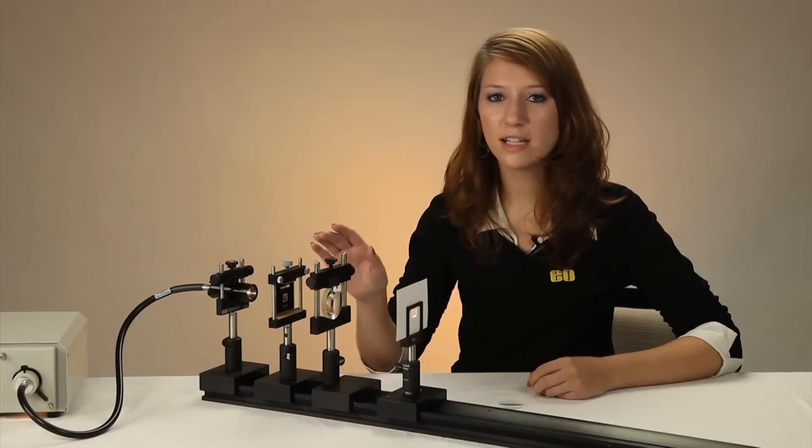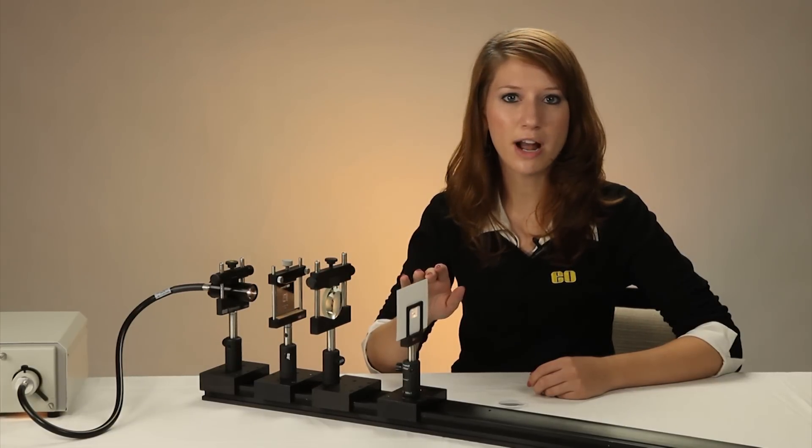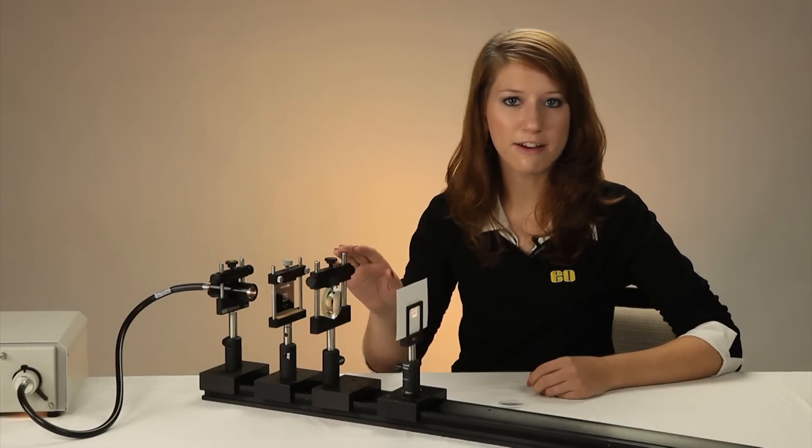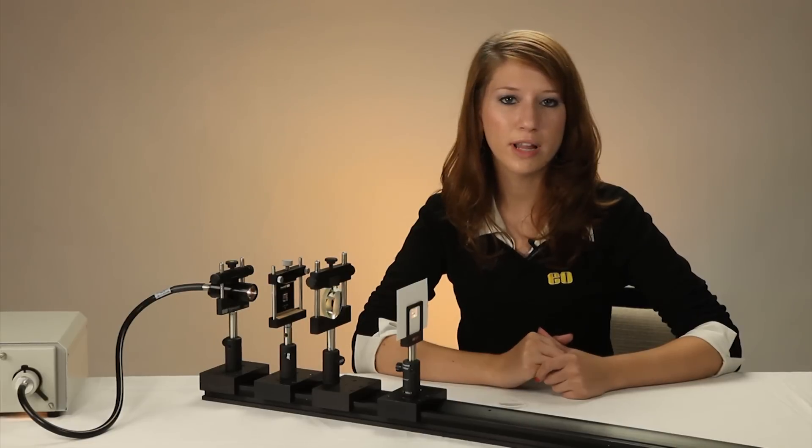If we call the distance from the object to the lens Z, the distance from the lens to the image plane Z prime, and the focal length of the lens F, we can use this equation to determine where the image will form or what focal length lens we need.